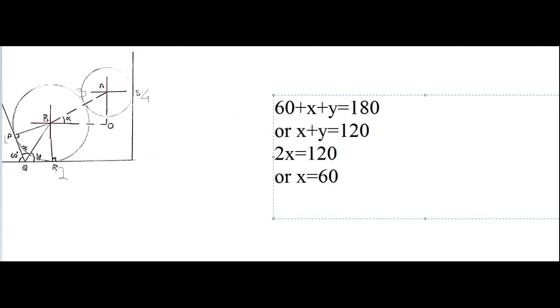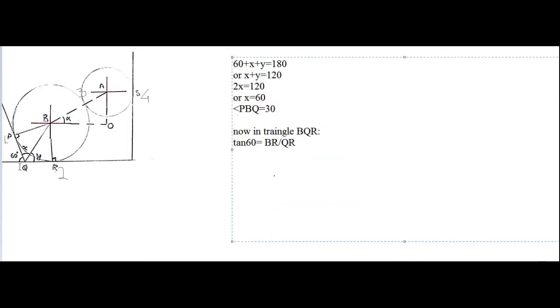Now we find the angle PBQ in triangle PBQ. Since the sum of three angles is 180 degrees, we have 90 + 60 + angle PBQ = 180 degrees, so angle PBQ = 30 degrees. In triangle BQR, using the property tan(theta) = perpendicular/base, we have tan(60°) = BR/QR, where BR is the perpendicular and QR is the base.